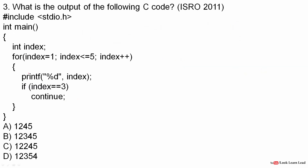Next question: what is the output of the following C code? We have an integer variable index initialized to 1, running until it is less than or equal to 5, incrementing index. We are printing index, and if index equals 3, continue. The key thing here is the continue statement.